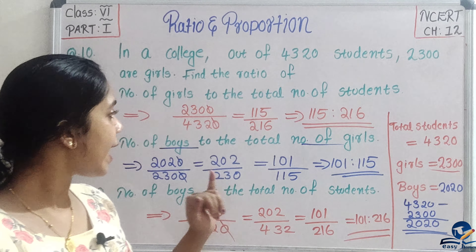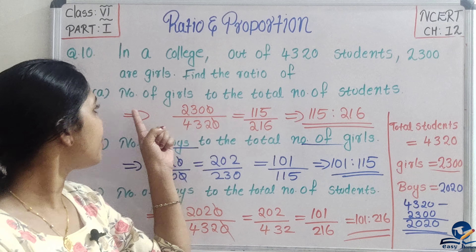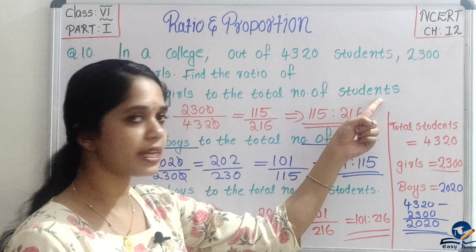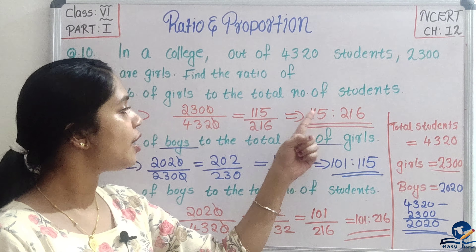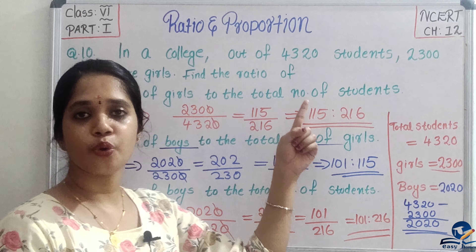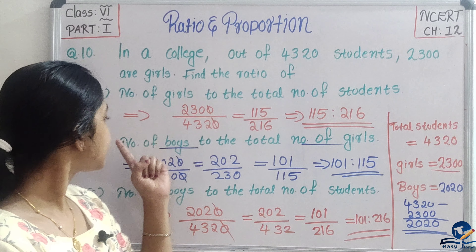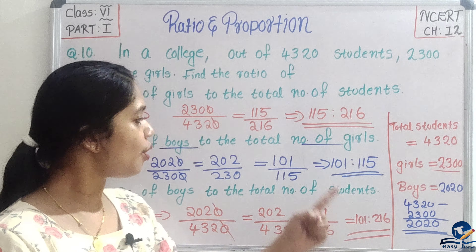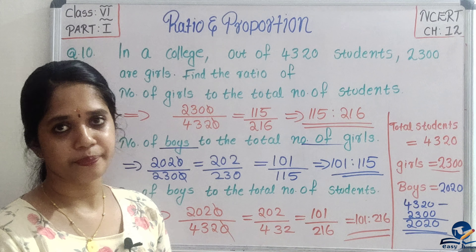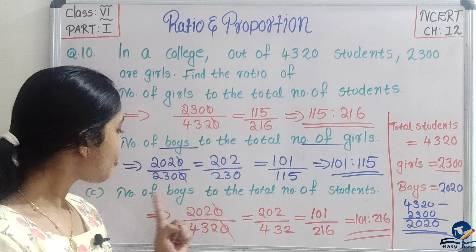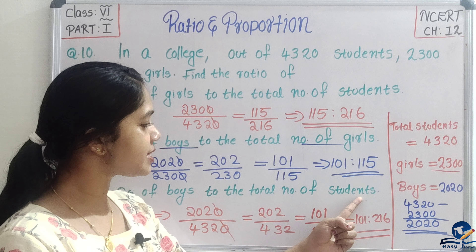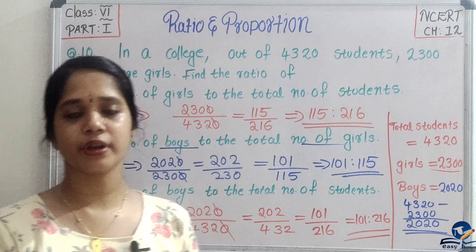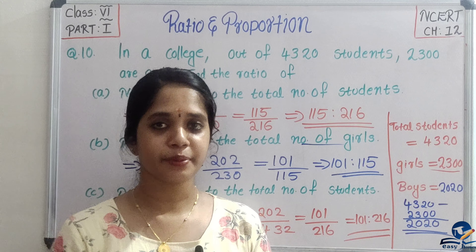So the final answers: ratio of girls to total students is 115 is to 216; ratio of boys to total girls is 101 is to 115; ratio of boys to total students is 101 is to 216.